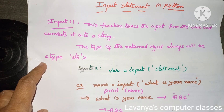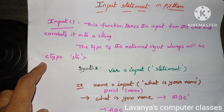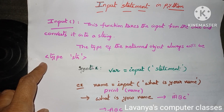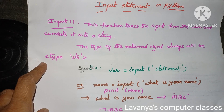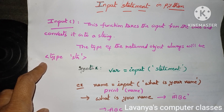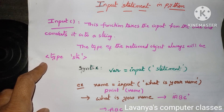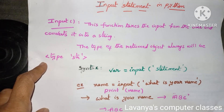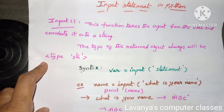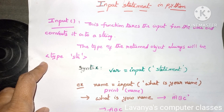Welcome to Lavanya's computer classes. In this video, I will explain input statements in Python. Whenever you want to give some values to a variable, there are two methods: one is the input statement and the second one is the direct assignment method.